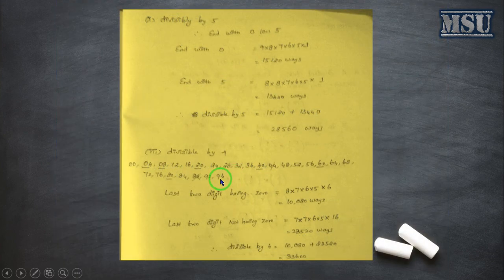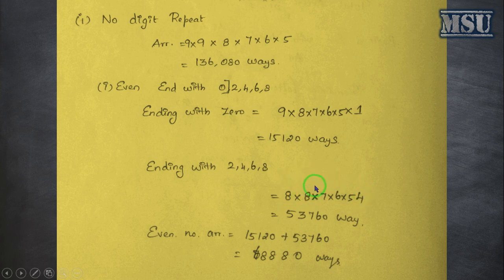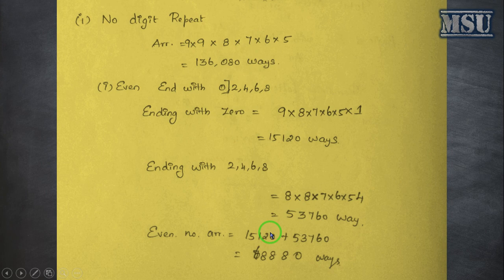If we are ending with 2, 4, 6, or 8, the last position has 4 possibilities. Here, we are having 8, which means 0 is not possible. Along with that, the last digit is also not possible. So here it is 8. For the second digit, the last digit is not possible and the first digit is also not possible. So here we are having 8, 7, 6, 5, and then we get this result. Either it may be ending with 0 or ending with other elements, so we are adding these 2 values and getting this answer.